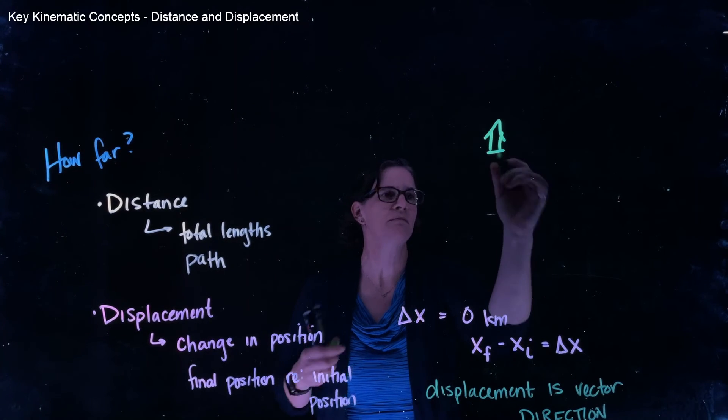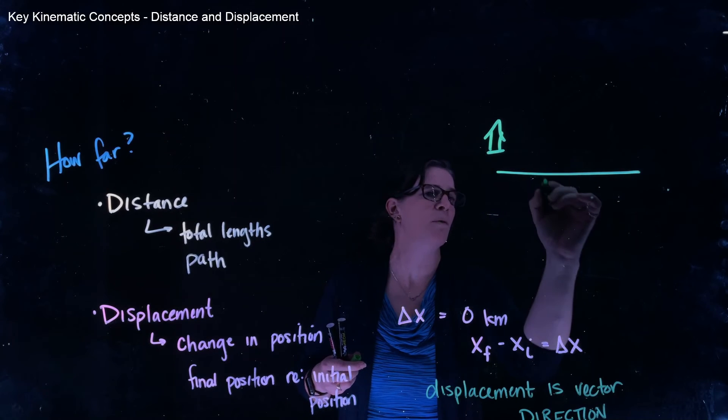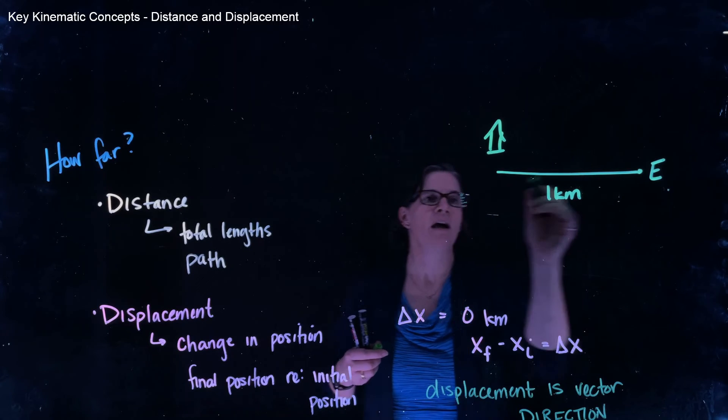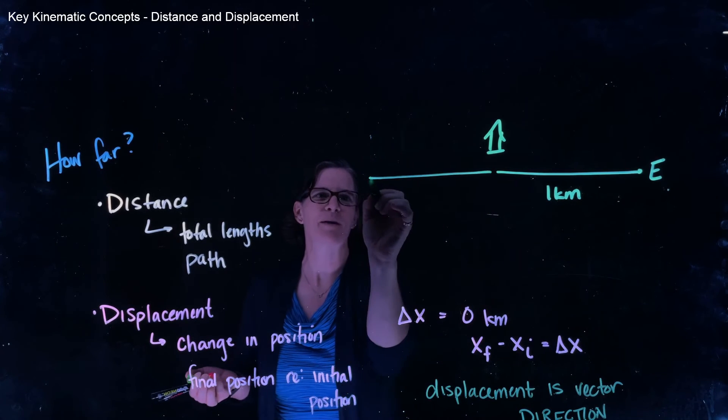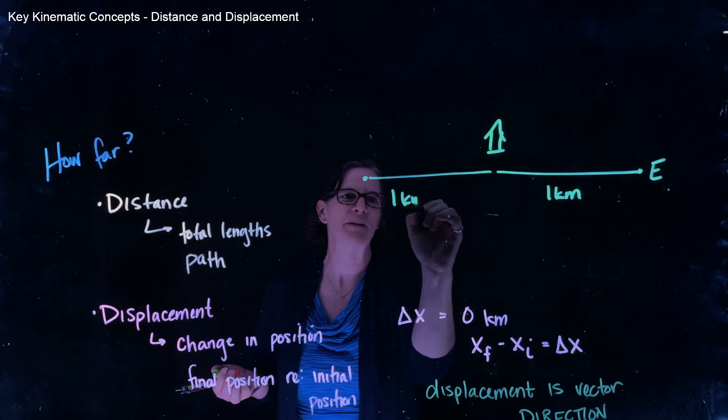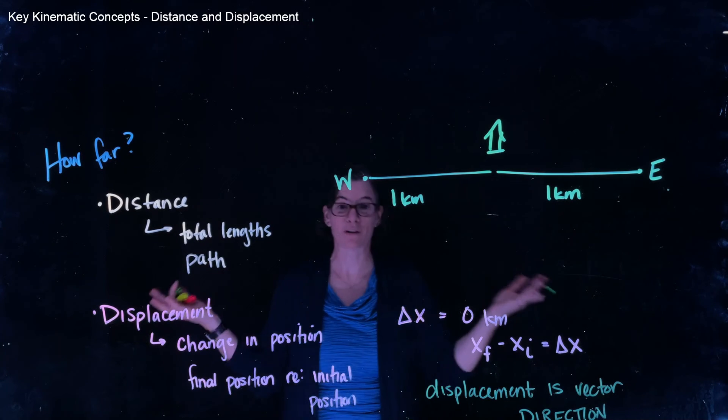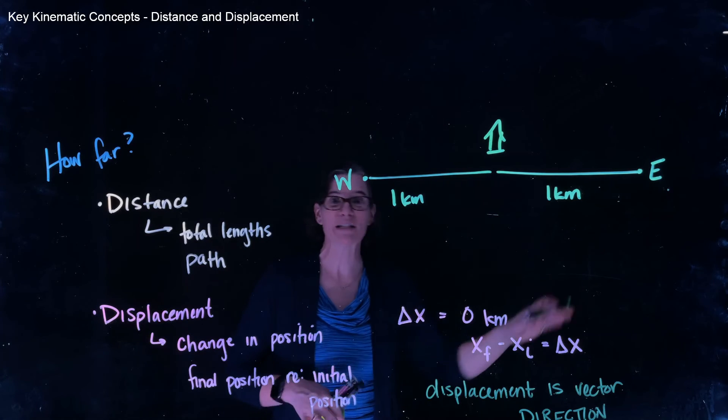and the farmer walked one kilometer to the east, that's slightly different than the farmer walking one kilometer to the west. She ends up in two different locations, one to the east, one to the west.